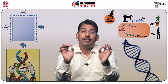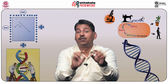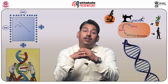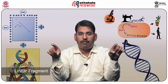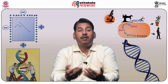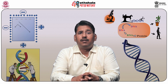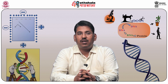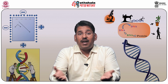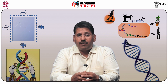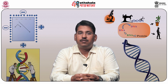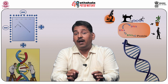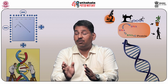Bacteriophage lambda-derived vectors: lambda phage is a linear vector, so a single restriction enzyme digestion creates two fragments, whereas cutting a circular plasmid vector with a restriction endonuclease only opens it into a linear fragment. The wild-type lambda phage has multiple restriction sites for commonly used restriction endonucleases. To overcome this, engineered phages have been designed by eliminating extra restriction sites. These engineered lambda phage vectors have a single restriction site at which foreign DNA can be inserted — these are known as insertional vectors.